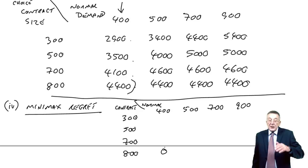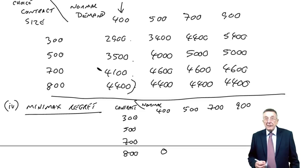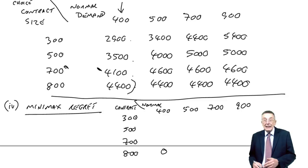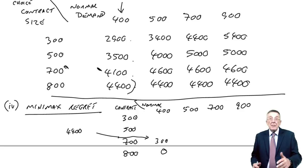But what happens if we'd actually gone for a contract size of 700? We'd have only had 4,100. We'd have only had 4,100. We know we could have had 4,400. So we've lost an opportunity cost or regret of 300.